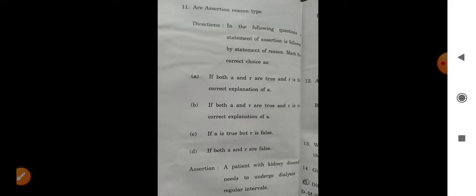An assertion or reason type question. If both A and R are true, R is the correct explanation of A. If both A and R are true and R is not correct explanation of A. If A is true and R is false, or A and R both are false.